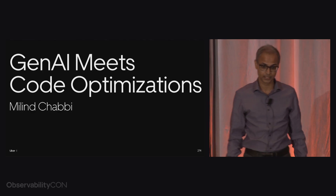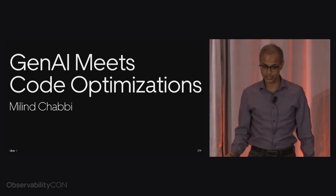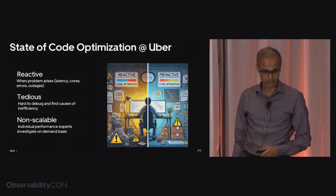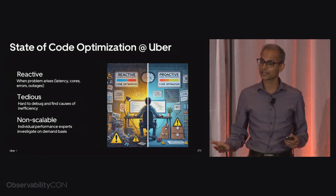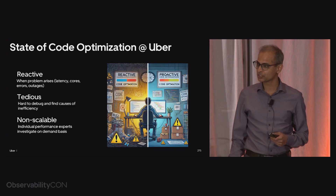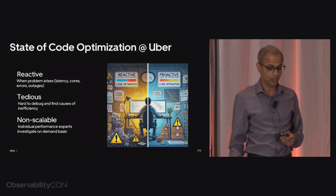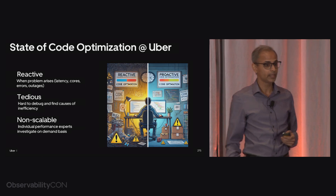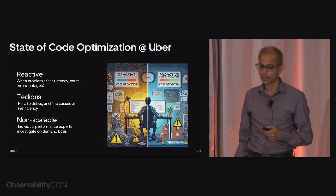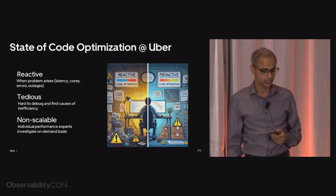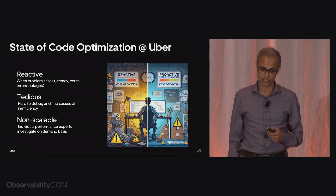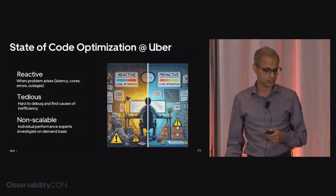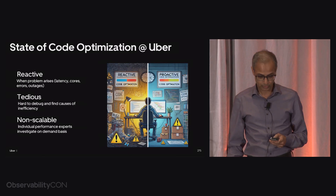Thanks, Shavik. We love profiles. Continuous profiling is great, but we want even more from it — and that's where Gen AI meets optimization. Developers are not just happy with profiles or root causes; they want automated solutions for code. This was the state of code optimization at Uber previously: reactive. Some problem happened — latency grew, cores went up, errors happened, an outage happened — that's when you would scramble to figure out what happened. It's tedious, hard to debug, and non-scalable — individual performance experts investigate on-demand.